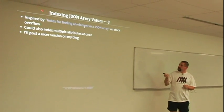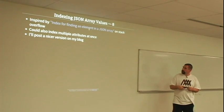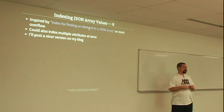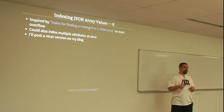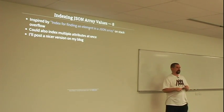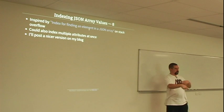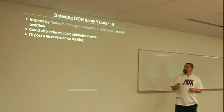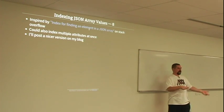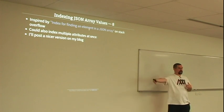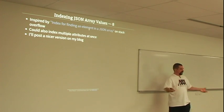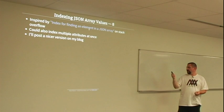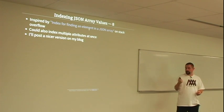That was inspired partly by a Stack Overflow post on indexing for finding an element in a JSON array, which was very good. I've taken that a little bit further, and I'll take it even further in a blog article. The other thing is you can index multiple attributes at once. If you do these kinds of lookups on very arbitrary data, it's handy to be able to index deeply into a structure and have a tree-aware version of a full-text index.